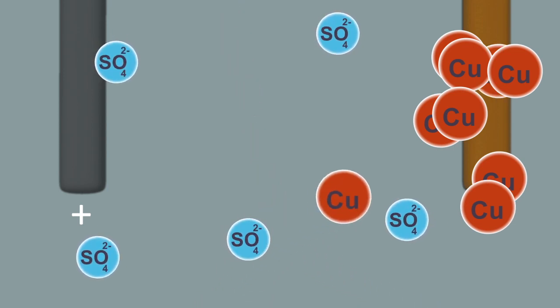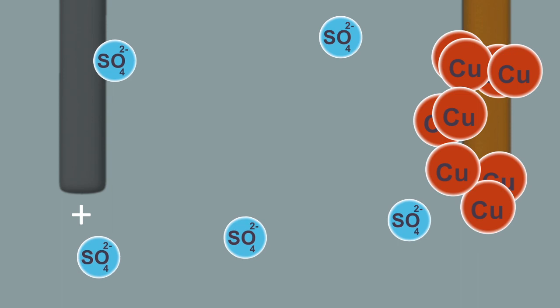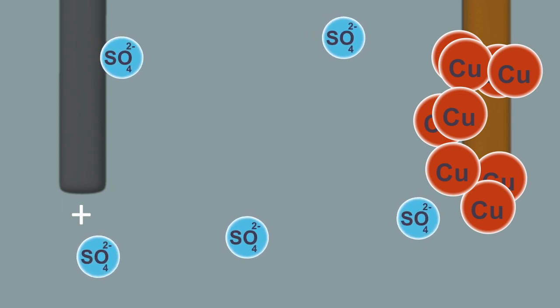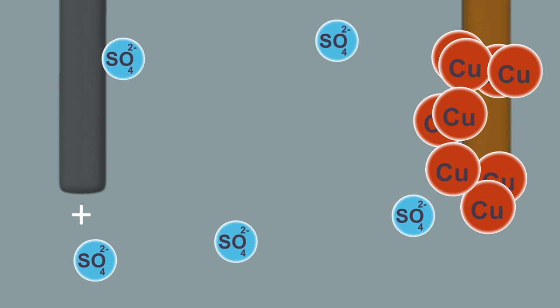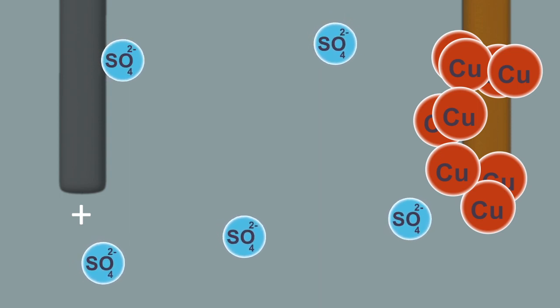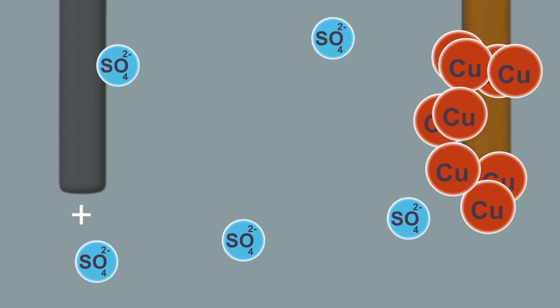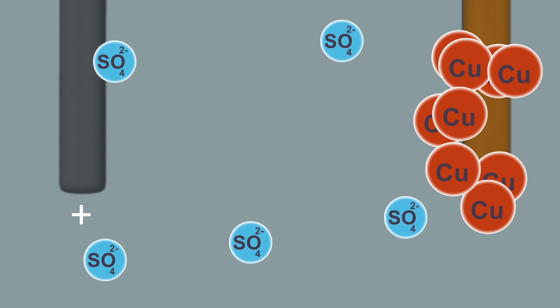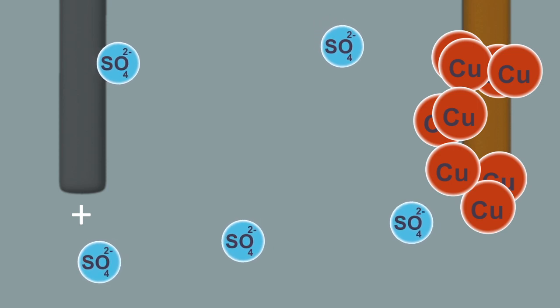Due to this, the color of the negative electrode changes to reddish brown. At this time, the copper ions in the solution decrease. Because of this, the color and concentration of the solution also decreases.